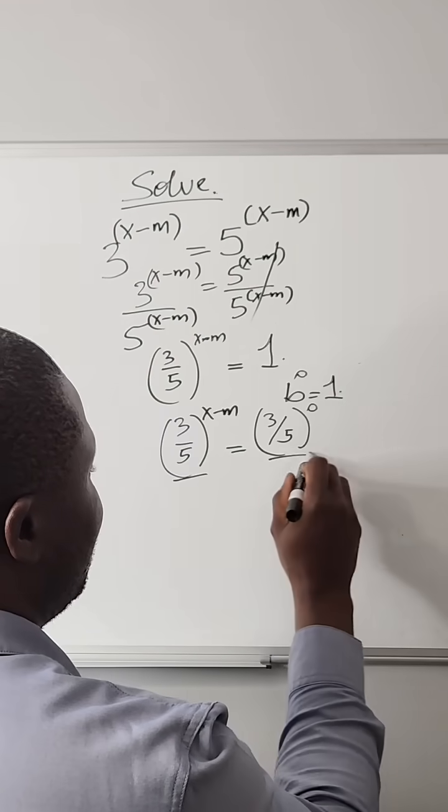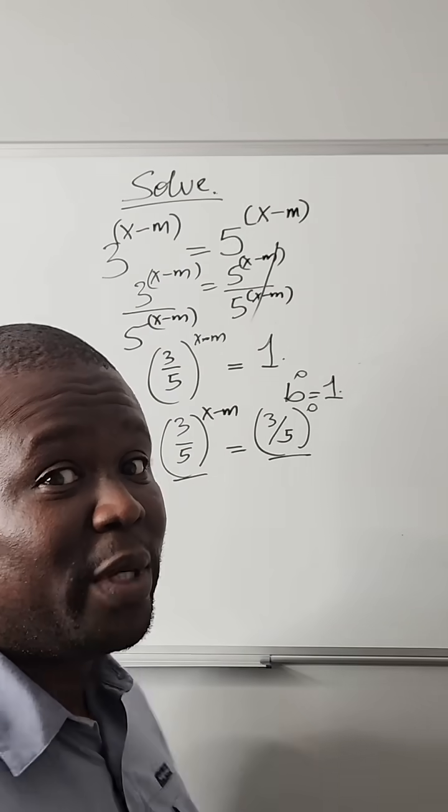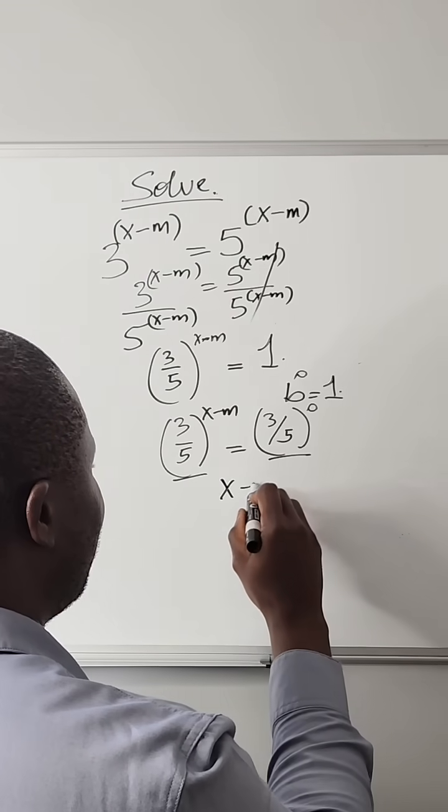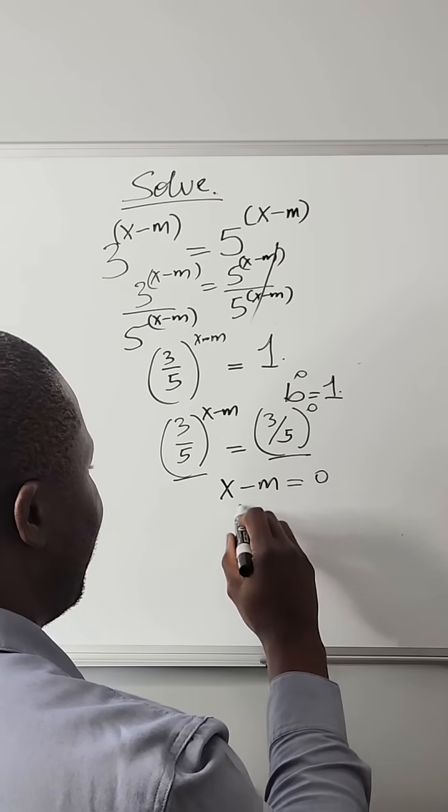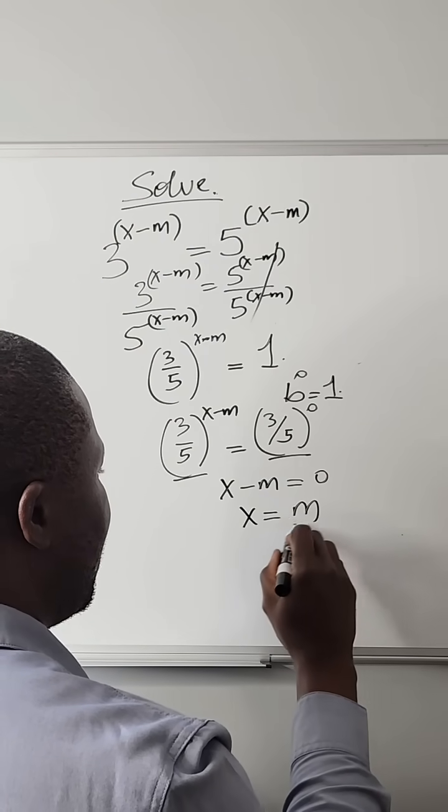Now the bases are the same, then we can equate the powers. So now this becomes x minus m equals 0, x equals m.